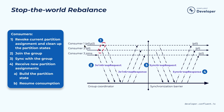Sometimes the consumers may have maintained some internal states for each of the assigned partitions. In that case, it will also clear up the state associated with those assigned partitions. Then all consumer instances will go through the process of sending the join request and then sync request to the group coordinator. In the end, the new partition assignment will be received by each consumer instance. The consumer instances, if they have state, will need to rebuild the state corresponding to those newly assigned partitions.